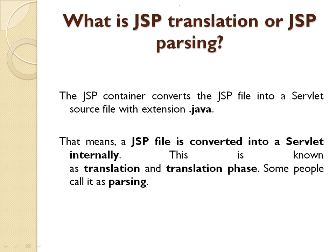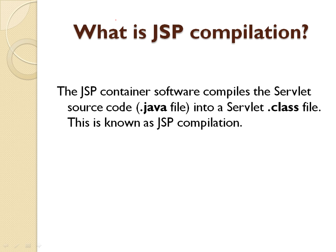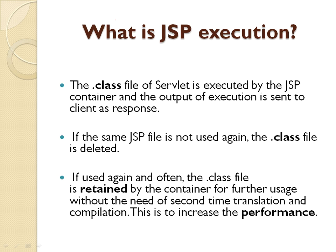What is JSP translation or JSP parsing? These are questions you may be asked. JSP translation or JSP parsing means the JSP container converts the JSP file to a servlet source file with a .java extension. This step is called JSP translation or JSP parsing. What is JSP compilation? The JSP container compiles the servlet Java file into a .class file — that is known as JSP compilation. What is JSP execution? In JSP execution, the class file of the servlet is executed by the JSP container and the output is sent to the client as a response.